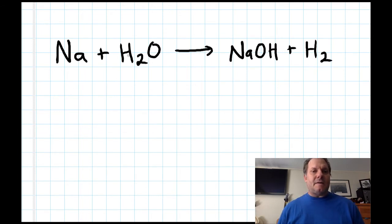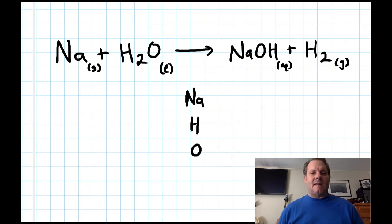Let's take a look at an example. So we have sodium reacting with water to form sodium hydroxide and hydrogen. To be more descriptive, I can actually point out that sodium is a solid, water is a liquid, sodium hydroxide ends up dissolved in the water forming something that's aqueous, and hydrogen is a gas. Our first step is to make a list of the elements that are involved in this reaction. I have sodium, hydrogen, and oxygen.